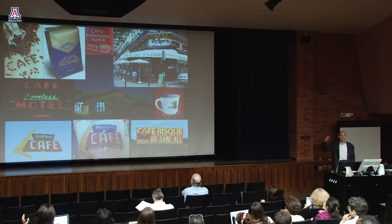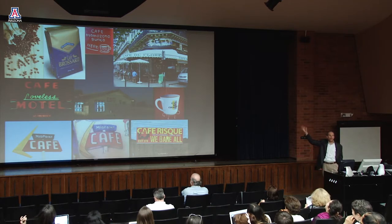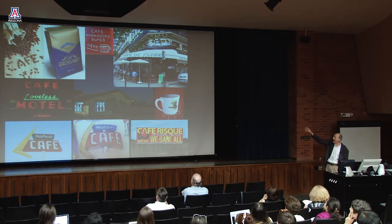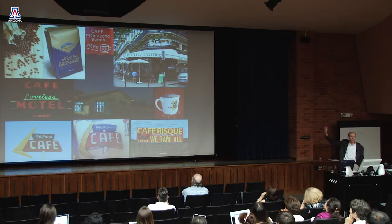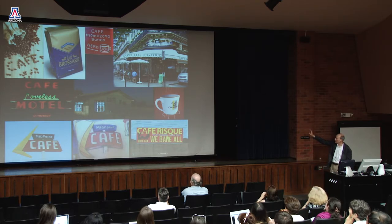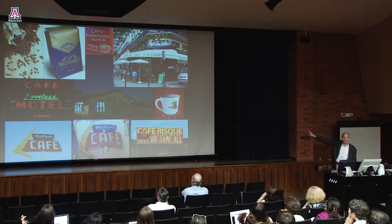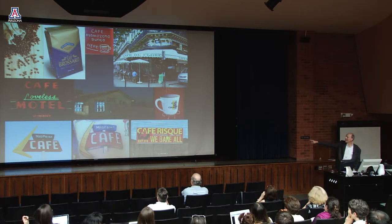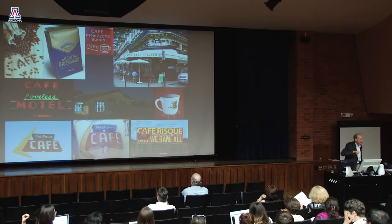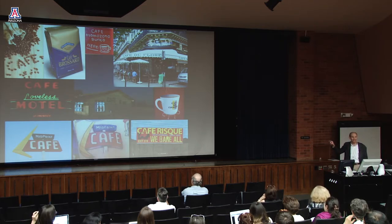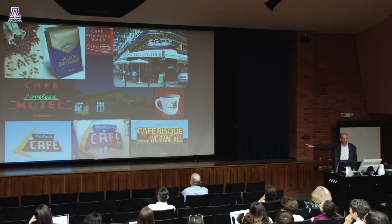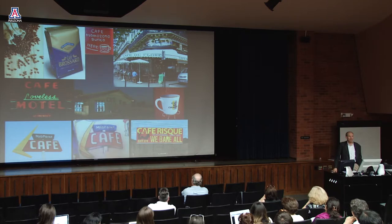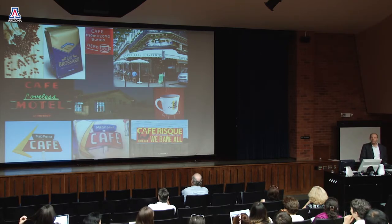Take the word CAFE — C-A-F-E. Depending on where we see it, it means slightly different things. We can see it spelled out with coffee beans, on a bag of coffee, as a sign for where to get coffee, as Café de Flore in Paris, as the Loveless Motel Cafe, as an abandoned cafe, as the Midpoint Cafe on Route 66, as a tattoo of that sign, or as 'Cafe Risqué.' The tattoo is radically different — it's not pointing to a café at all. Very different meanings depending on context.